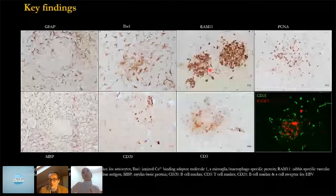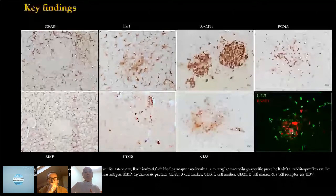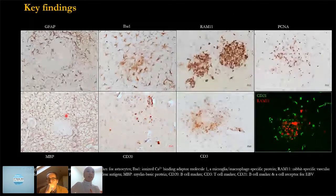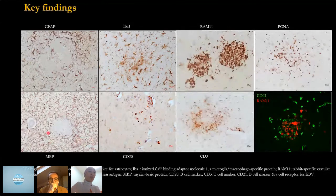We can also see some B and T lymphocytes, which usually make up the rim of the aggregates. We also see no evidence of demyelination or disruption of myelin basic protein as a result of the formation of these aggregates in the brain.